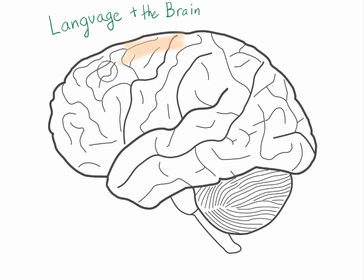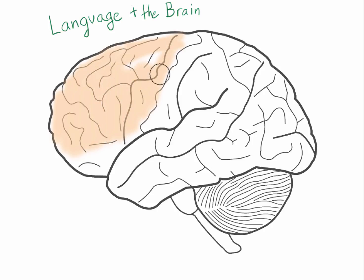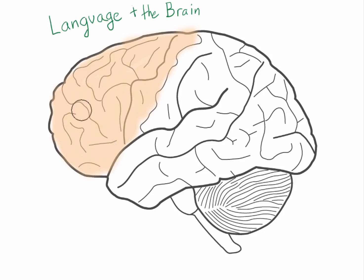First we have the frontal lobe, which I'm coloring in this nice peach color. The frontal lobe is generally responsible for planning. And as you can imagine, when you're speaking, you have to think about what you're going to say next, so you have to do a lot of planning. The frontal lobe also has Broca's area, which I'll color in more or less right here on the left side — usually not on the right for most people.